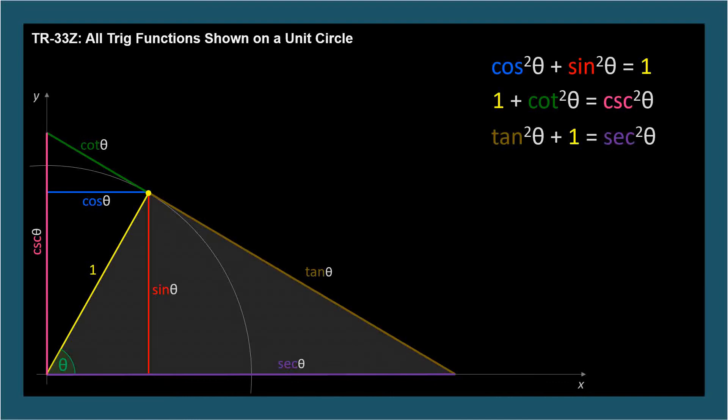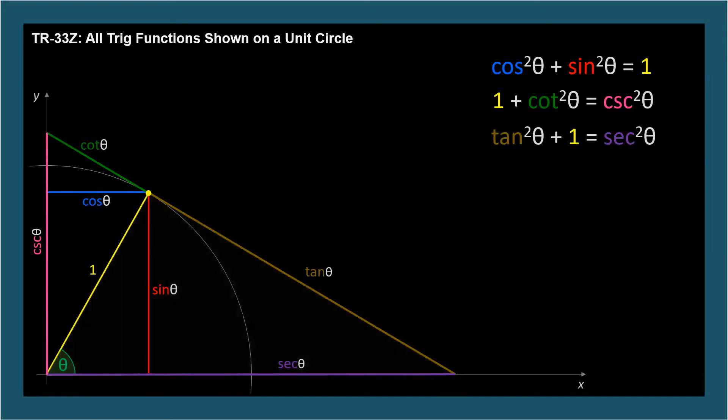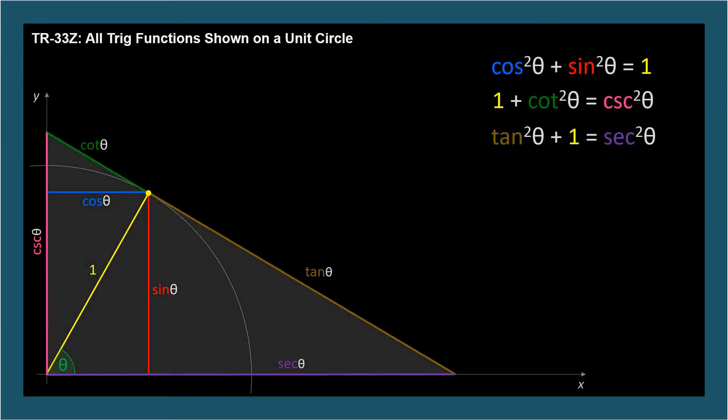And there are more triangles, though their equations are not as well discussed as the first three. For example, let's look at this big triangle. Did you know that cosecant squared theta plus secant squared theta equals cotangent theta plus tan theta quantity squared? I didn't either until I drew this diagram.